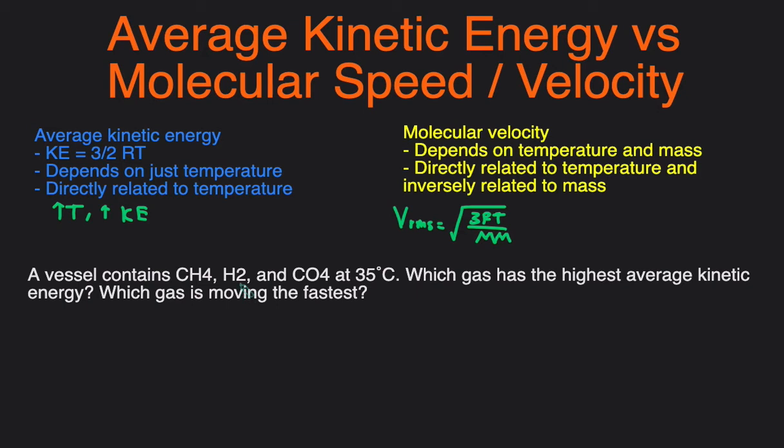So let's take a look at an example to differentiate the difference between average kinetic energy and molecular velocity and speed. We have a vessel that contains CH4, H2, and CO2 at 35 degrees Celsius.